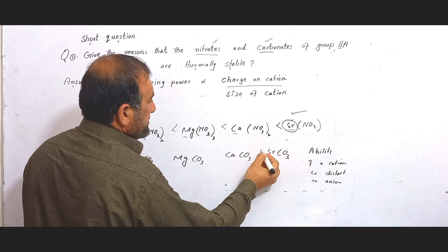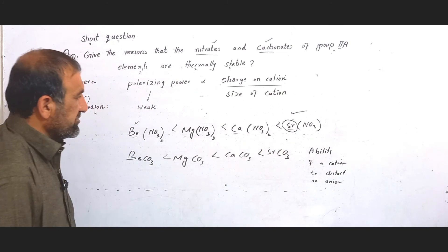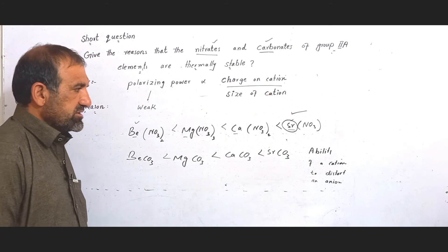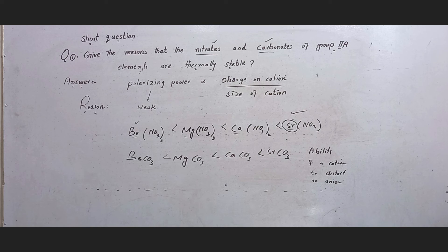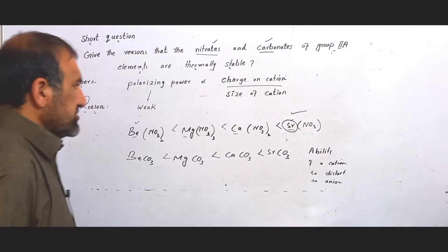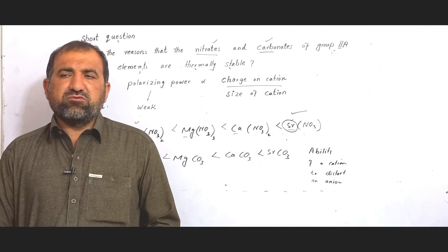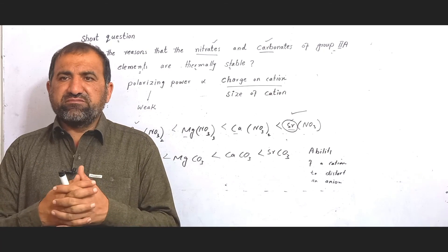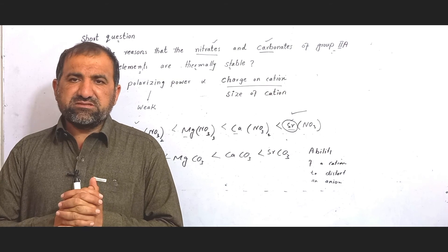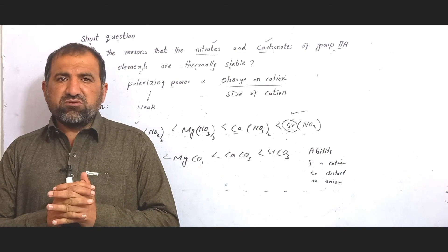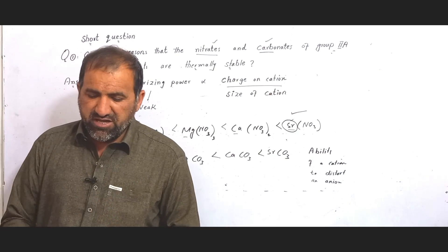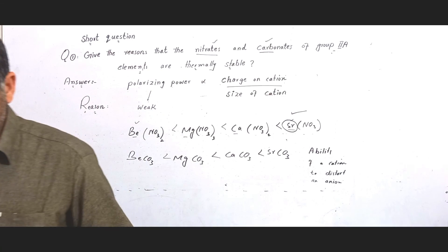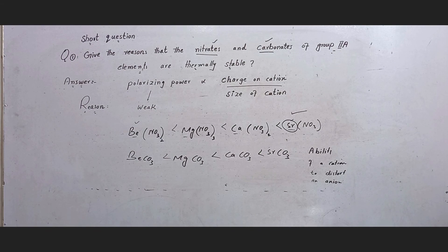Barium carbonate will be more thermally stable than beryllium carbonate. This is the trend: carbonate thermal stability increases down the group. Thank you very much.